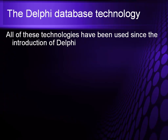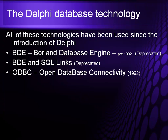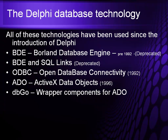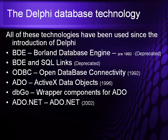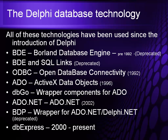The Delphi database technologies used over the years include the BDE or Borland Database Engine, introduced in 1992 and now deprecated. There's also BDE SQL Links, also deprecated. There's ODBC, Open Database Connectivity, introduced in 1992. There's ADO, ActiveX Data Objects, introduced in 1996 by Microsoft, and DBGO, a set of wrapper components for ADO. We also have ADO.NET, introduced in 2002 — ADO.NET doesn't stand for anything except ADO.NET. And there's BDP, the Borland Data Provider, a wrapper for ADO.NET and Delphi.NET, also deprecated. Finally, there's DBExpress, introduced in 2000 and still available today.